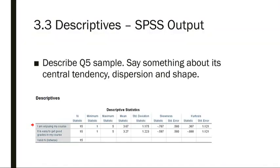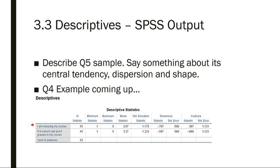What I want you to do on your own is describe the Q5 sample the way you would in APA style - see what you can say about central tendency, dispersion, and shape: is it skewed, is there acute kurtosis? That's for variable Q5, 'It is easy to get good grades in my course.' Just to give you an example, I'm going to describe variable Q4, 'I'm enjoying my course.'